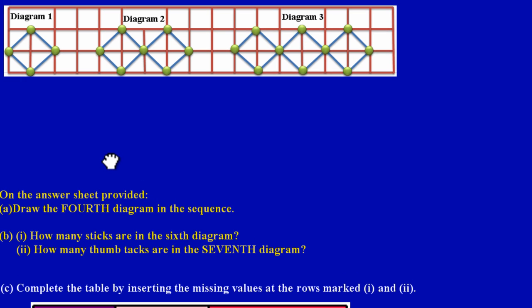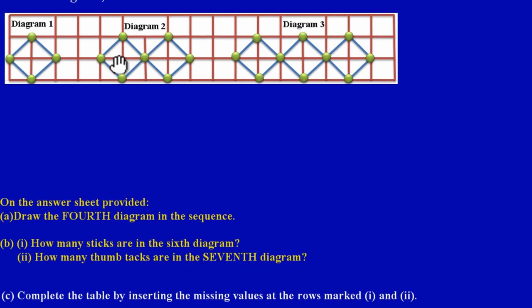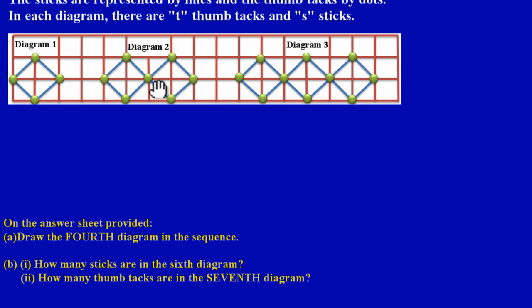Diagram one has four sticks and four thumbtacks. Diagram two has eight sticks if you count carefully—one, two, three, four, five, six, seven, eight sticks—and that looks like seven thumbtacks.